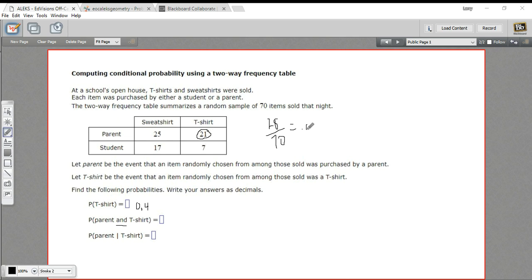So this would be, that was 0.4, this would be 21 over 70. So we'll punch that into the calculator. That is 0.3. So 0.3 for the probability of parent and t-shirt.